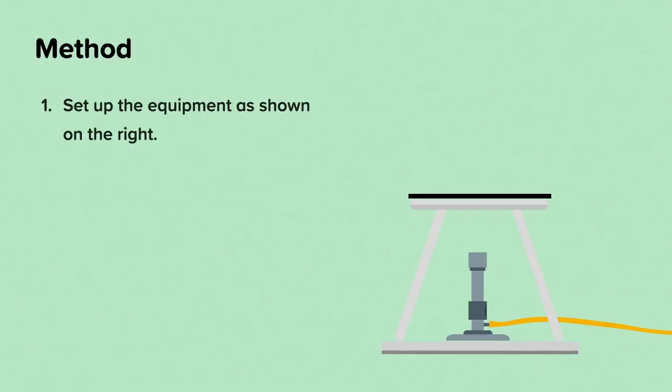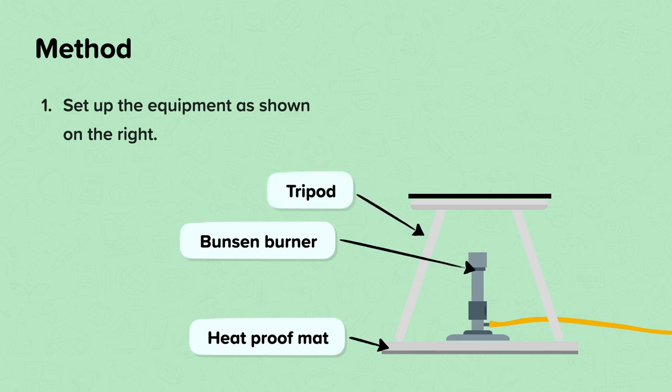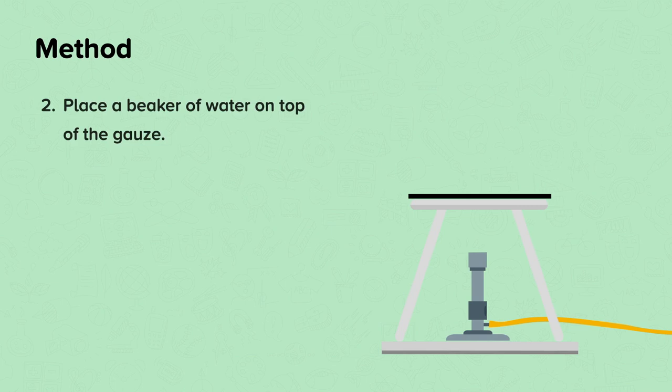We're now going to go through the method. Step one, set up the equipment as shown on the right. So you'll need a heatproof mat, a Bunsen burner placed on top of the heatproof mat, tripod placed over the Bunsen burner and the gauze to rest on top of the tripod. Step two, place a beaker of water on top of the gauze.